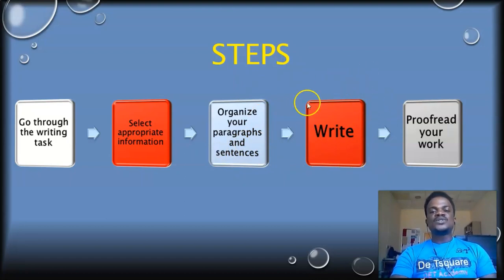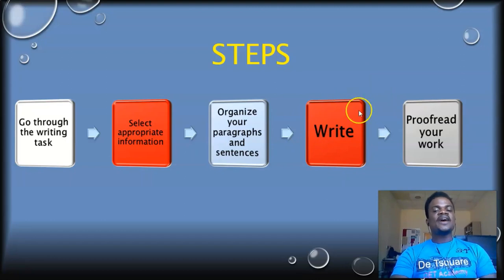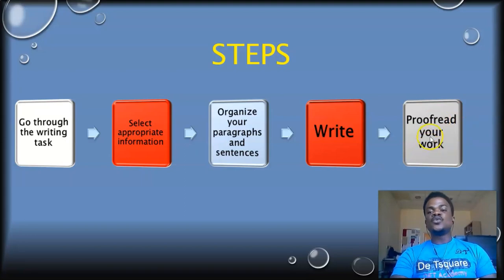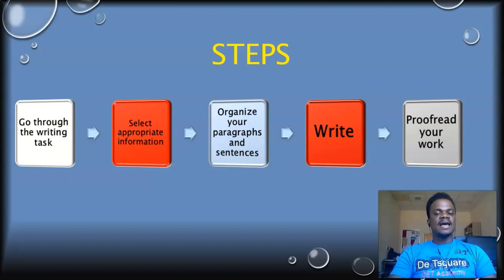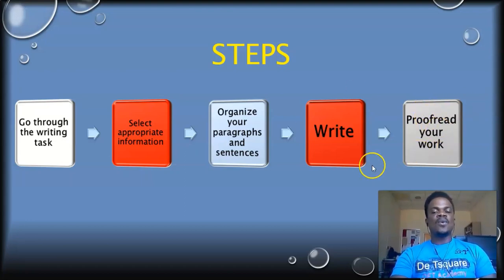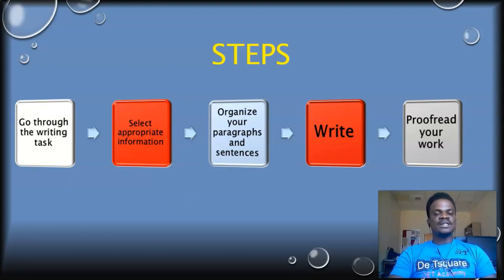After writing, most students tend to stop, which is very wrong. The most important step in all these steps is for you to proofread your work. No matter how good you are in your writing, sometimes we tend to make mistakes. When you don't proofread your work, those mistakes might drop your score. Try to cultivate the habit of always going through your work after writing.